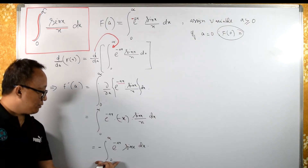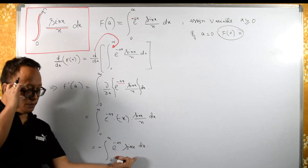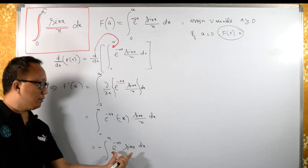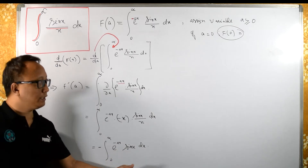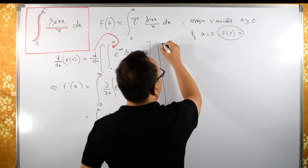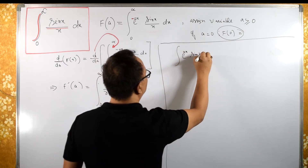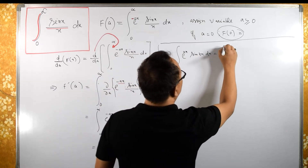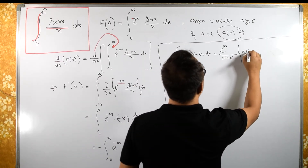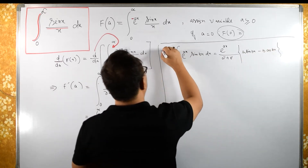We have a standard integration here. You can apply integration by parts, tabular form, or the DI method. You can refer to my video on the integral of e^(ax) sin(bx). I will write the formula directly: the integral of e^(ax) sin(bx) dx equals e^(ax) / (a² + b²) times [a·sin(bx) − b·cos(bx)]. This is the formula we have.